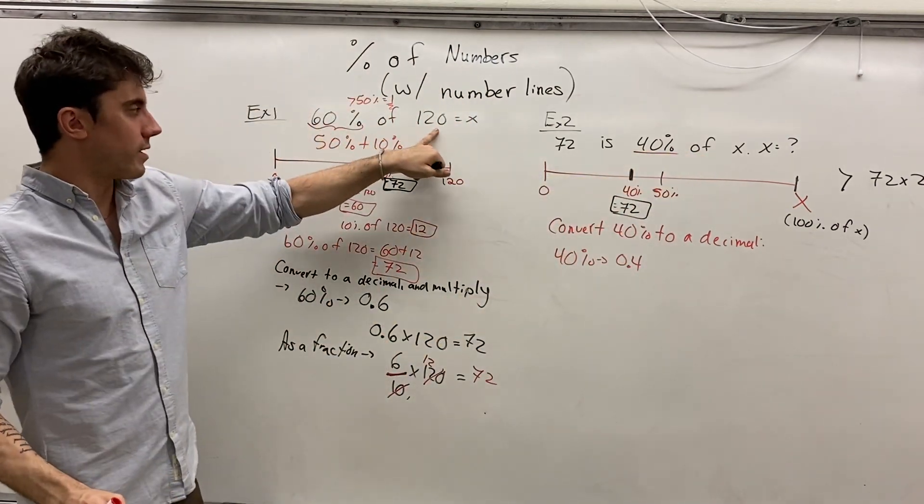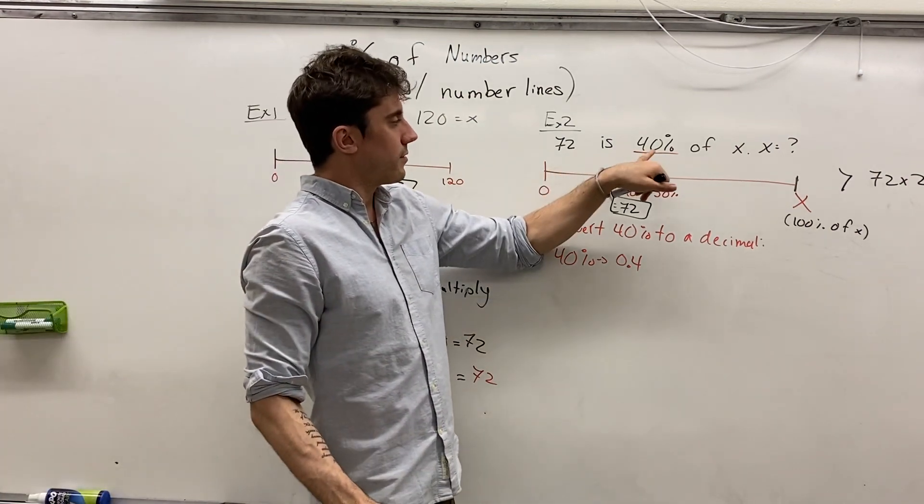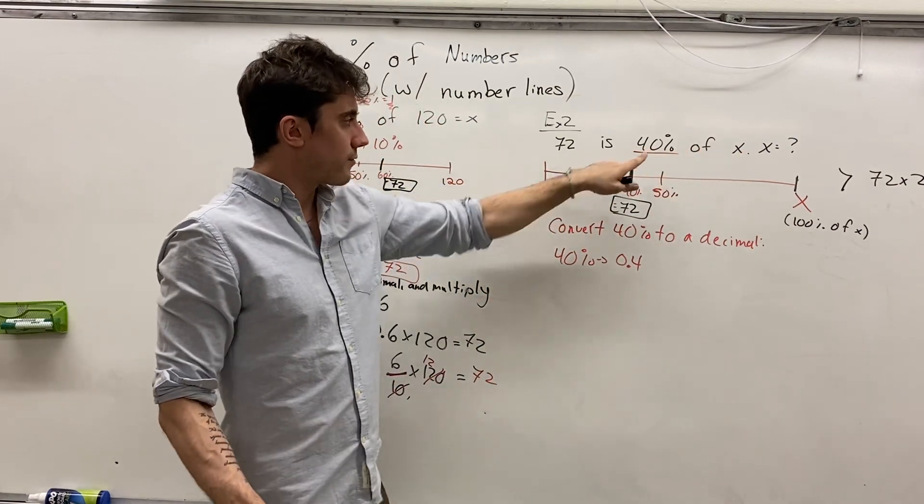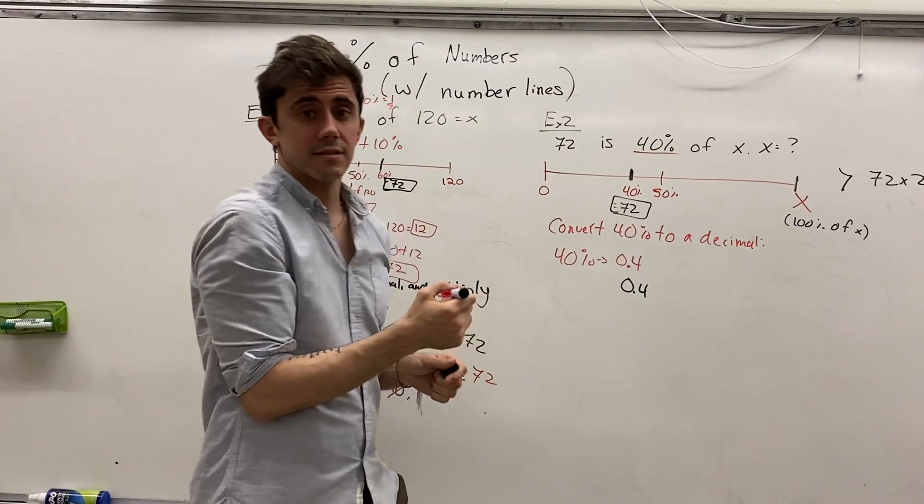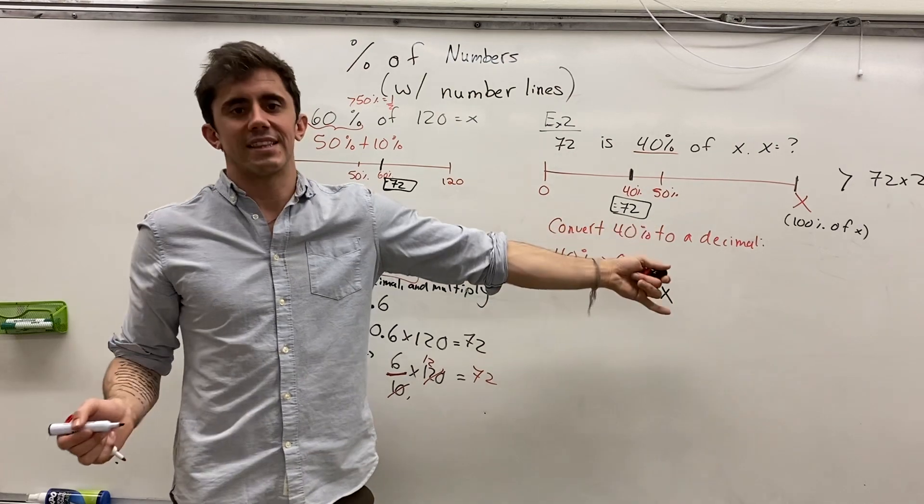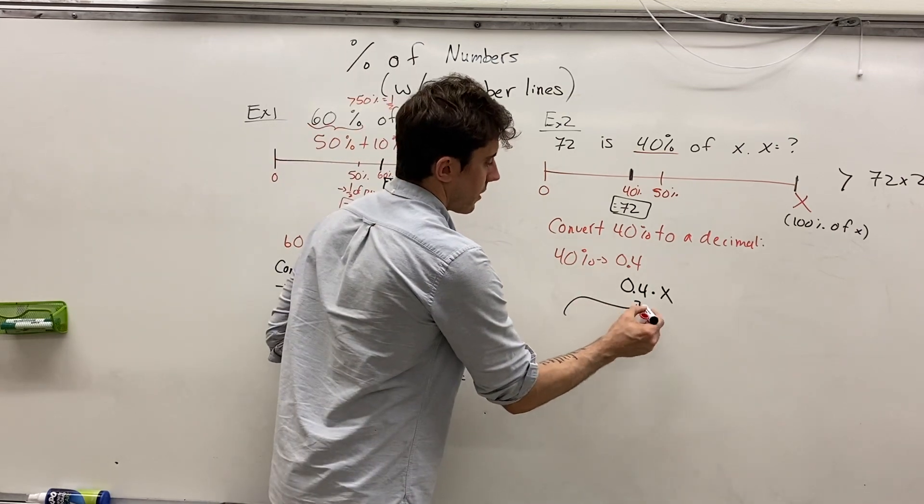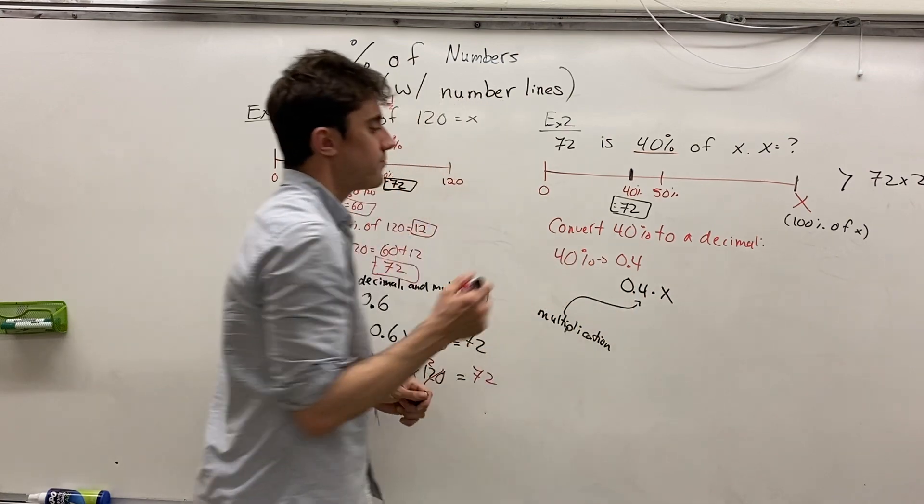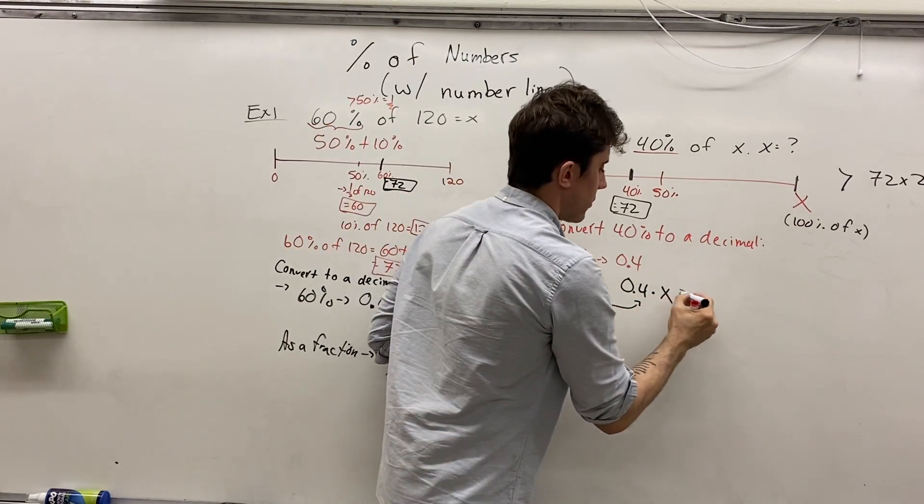Here we have 60% of 120, and so we multiply the decimal for 60% by 120. Here we have 40% of x, and so we're going to multiply the decimal for 40%, 0.4, by x. Here's where the dot comes into play. Because we don't want to use a multiplication symbol that looks a lot like the x. And so I'm going to write 0.4 dot x. That means multiplication. We have 0.4 times x. And we know that that is 72. And so now we have an equation established.